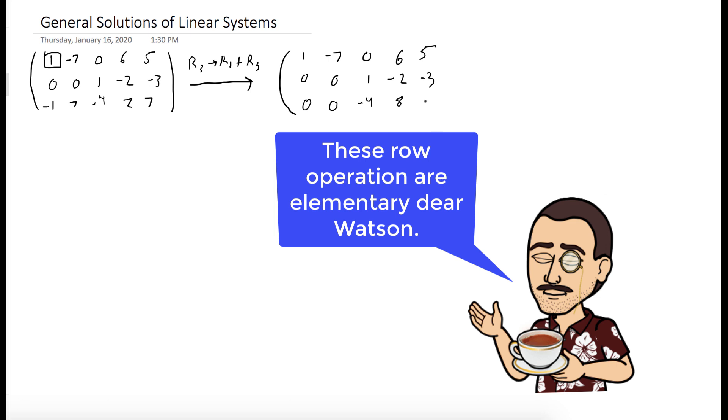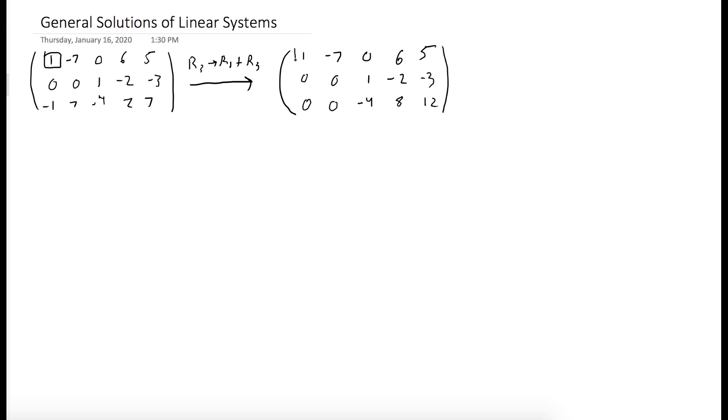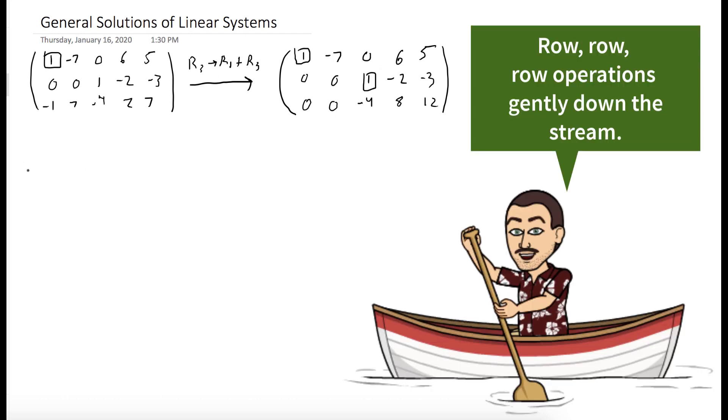We can see that the second column is not a pivot column, but the third one is. So we can use the one in row two to eliminate the negative four in row three. And we do that by replacing row three with four times row two plus row three.